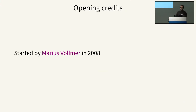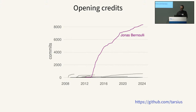Before getting into what Magit looks like, let me acknowledge two key people behind it. It was created in 2008 by Marius Falmer. Since then, over 300 people have contributed at least one commit to the repo. But Jonas Bernoulli in particular has put in an enormous amount of work making Magit what it is today. And commit counts are just capturing a very small slice of the amount of work he does maintaining Magit, not to mention lots of other Emacs packages.